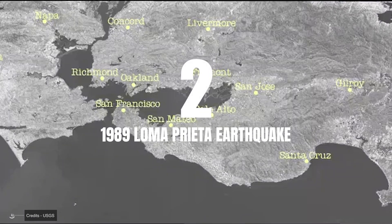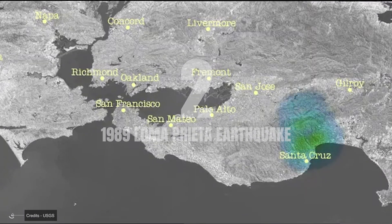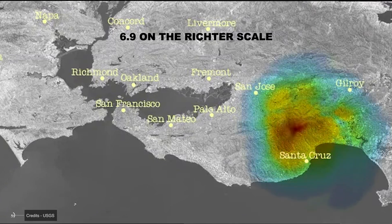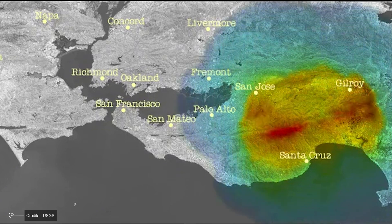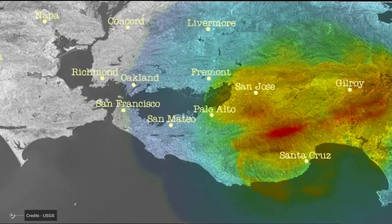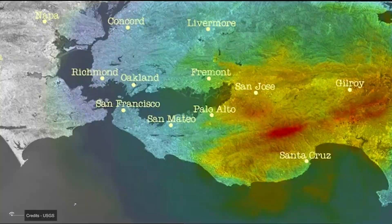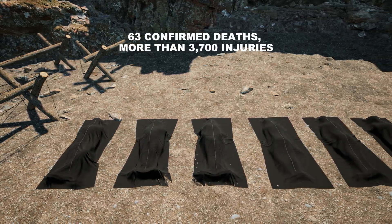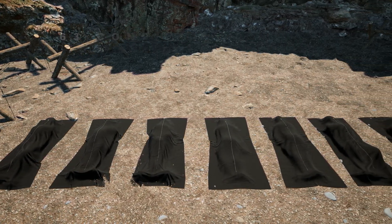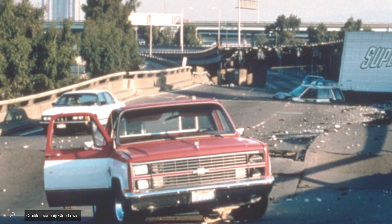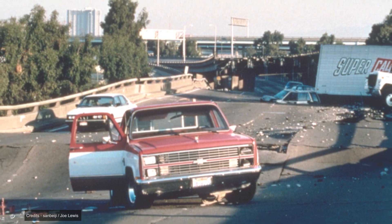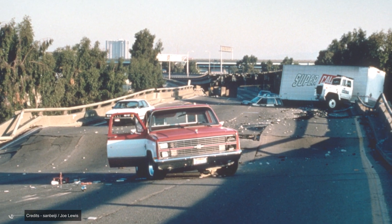The 1906 earthquake marked a turning point in understanding and preparing for earthquakes in California and worldwide. The 1989 Loma Prieta earthquake, with a magnitude of 6.9 on the Richter scale, was caused by a segment of the San Andreas Fault near Monterey Bay. Although smaller in magnitude than the 1906 earthquake, the Loma Prieta earthquake had a devastating impact, especially in the San Francisco Bay Area. There were 63 confirmed deaths, more than 3,700 injuries, and damages estimated at $6 billion. The collapse of the Nimitz Freeway in Oakland and significant damage to the San Francisco-Oakland Bay Bridge were among the most prominent effects.